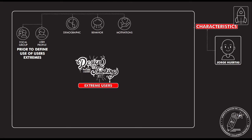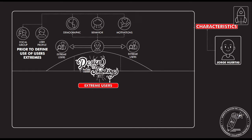When you do that, you will understand the demographics, the behavior, and the motivation that the group has. You will realize that the majority of users are in the center — if you are investigating ten users, at least eight can be there. But sometimes you will realize that at least ten percent, or in other cases twenty percent, have different behaviors. That is what is called an extreme user, because they are not part of the group; their behavior is different and they start differentiating themselves from the others.